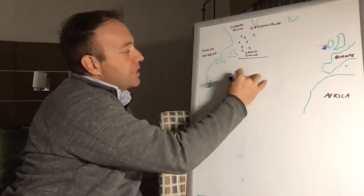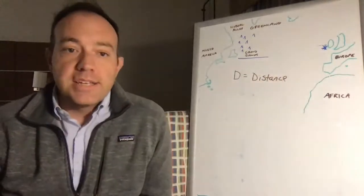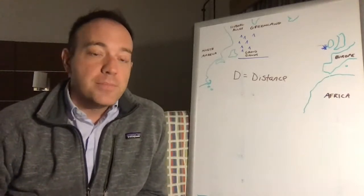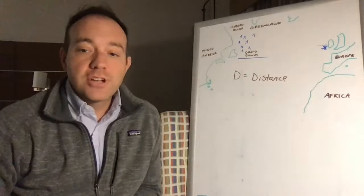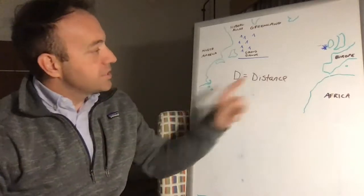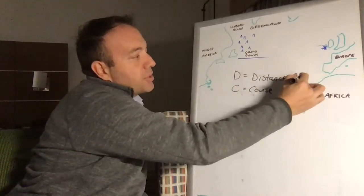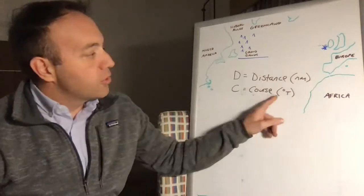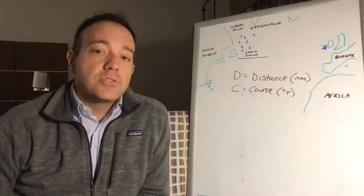The first definition: D equals distance, always in nautical miles. C equals course, always in degrees true. When doing parallel sailings, we're going to have a course of 090 degrees true or 270 degrees true — due east or due west. Venu's spherical trigonometry is the type of trig involved, but we're really just going to be plugging numbers into a formula.